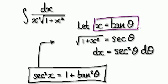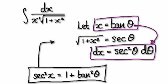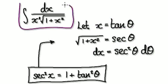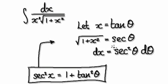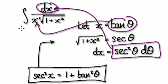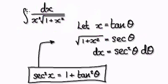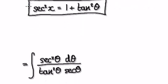From the substitution x = tan(θ), differentiating gives us dx equals sec²(θ) dθ — we've done this many times. Now substitute back into the original integral: the dx becomes sec²(θ) dθ, and the expression inside the integral becomes tan²(θ), while the square root block becomes sec(θ).